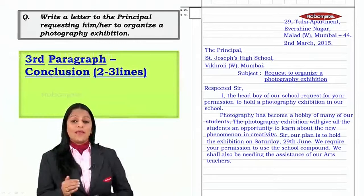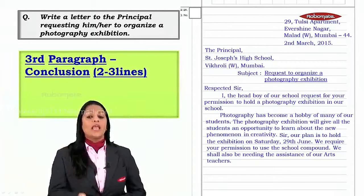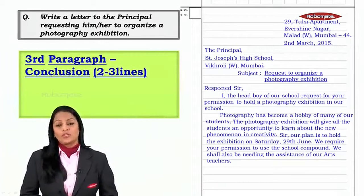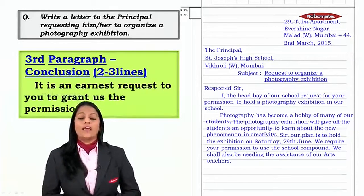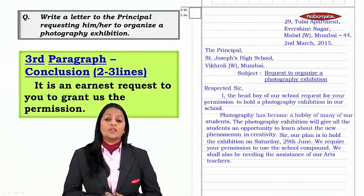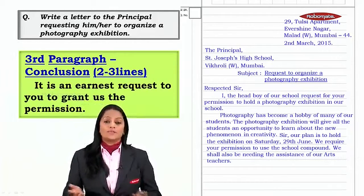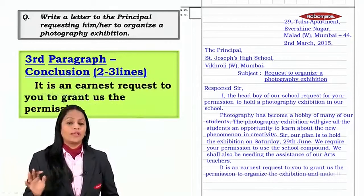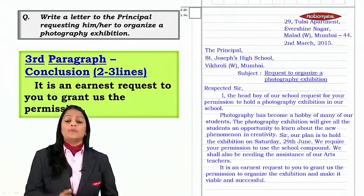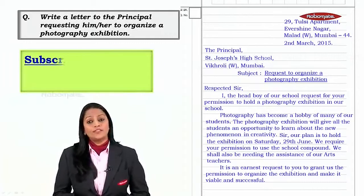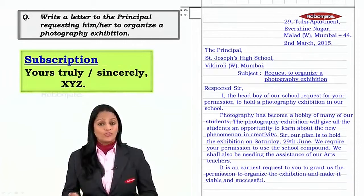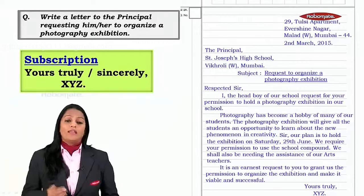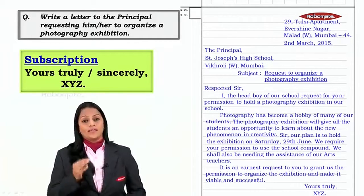We have developed the second paragraph with the three parameters, and now we go on to the third paragraph — the conclusion — which is again going to be short, two to three lines. Here is an example: 'It is an earnest request to you to grant us the permission,' or simply 'Kindly grant us the permission.' You can write it in any way but keep it simple. Finally, we have the subscription — yours truly or yours sincerely — then a comma, and then X Y Z.